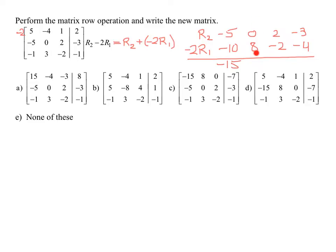Now we're going to add 0 to 8, that's 8. 2 and negative 2 is 0. And lastly, negative 3 and negative 4 is negative 7. So that is my new row 2.